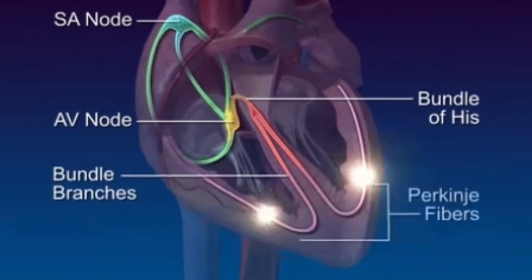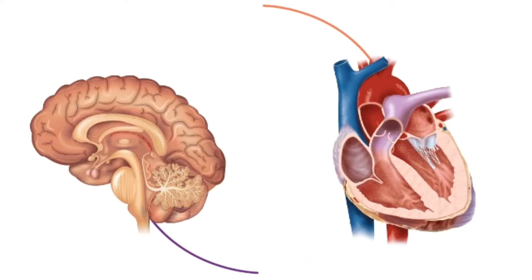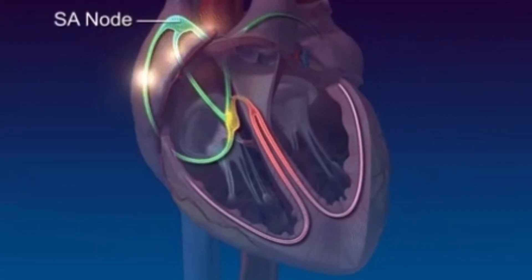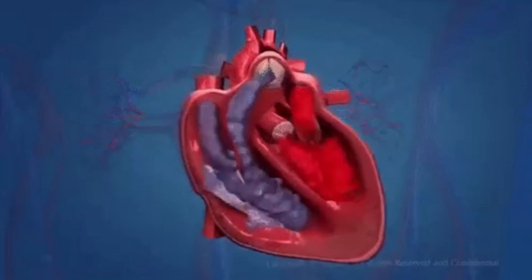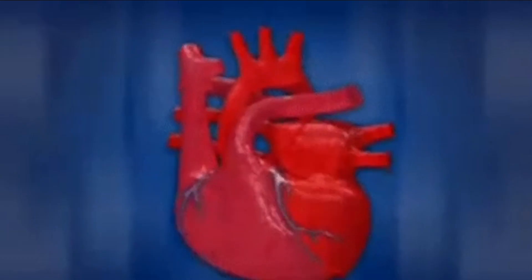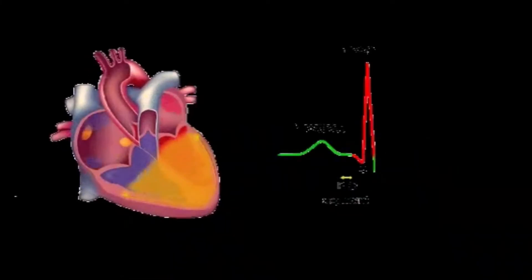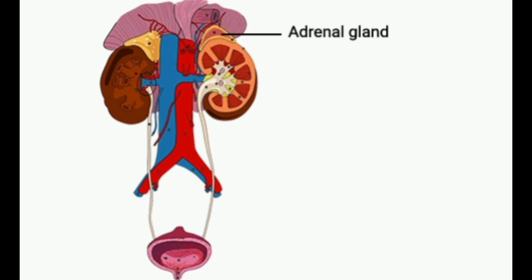In neural regulation, a special neural center in the medulla oblongata of our brain can moderate cardiac function through the autonomic nervous system. Neural signals through the sympathetic nerve increase the rate of heartbeat by stimulating the SA node, and also increase the strength of ventricular contraction and thereby cardiac output. Neural signals through the parasympathetic nerve can decrease the heart rate by inhibiting the SA node, slowing the conduction of action potentials and thereby decreasing cardiac output.